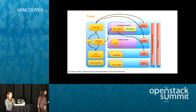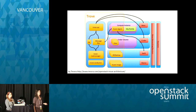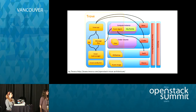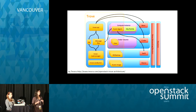In the middle, we have Nova, Cinder, Swift, and Glance. Trove uses Nova to manage the compute instances it needs to provision databases. It also relies on Cinder to manage the volumes for storage. When you do a backup, the backups are stored in Swift. And all the images that have the information and bits for the data stores you want to provision are stored in Glance.